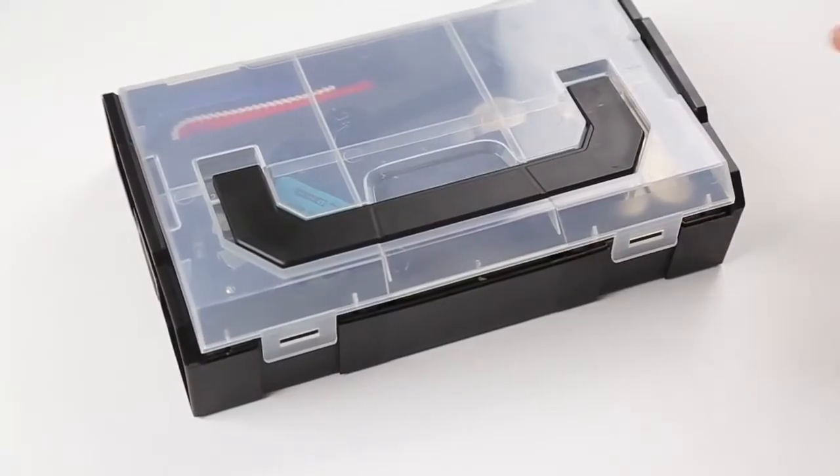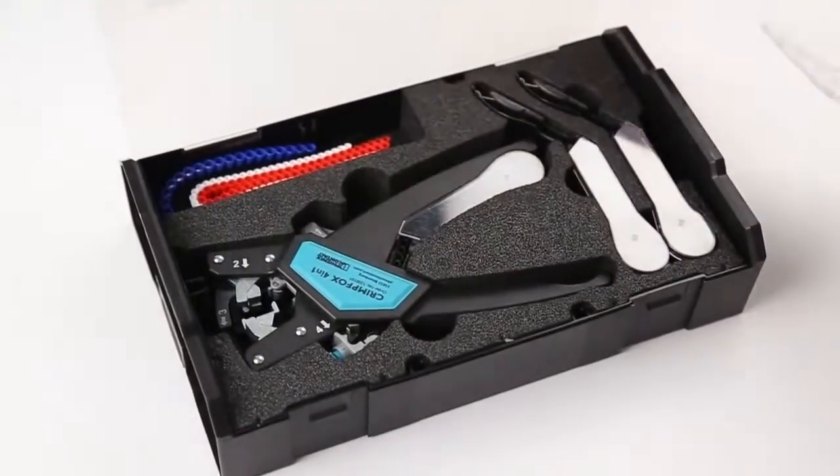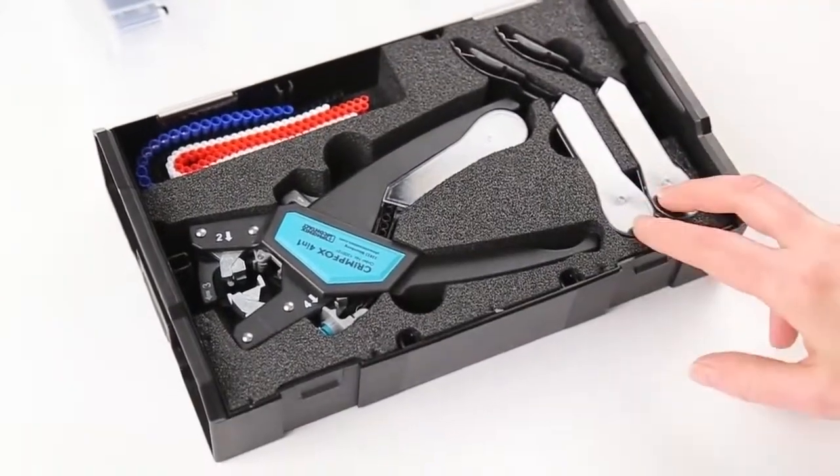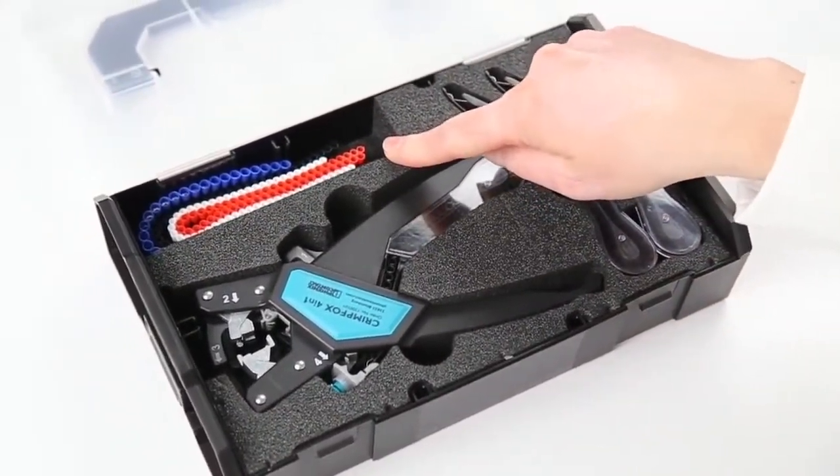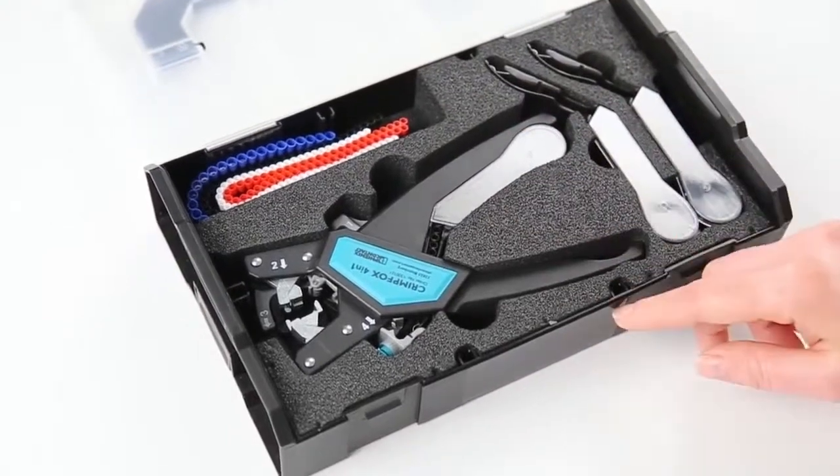The CrimpFox 4-in-1 can also be purchased in a set that includes two additional magazines, a slot to store ferrule strips for easy American wire gauge changeover, all packaged in a handy carrying case.